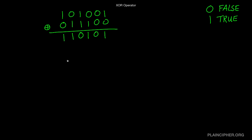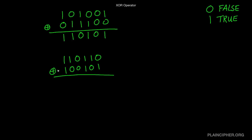Let's try another example: 1, 1, 0, 1, 1, 0 XORed with 1, 0, 0, 1. 1 XORed with 1 gives 0. 1 XORed with 0 is 1. 0 XORed with 0 is 0. 1 XORed with 1 is 0. 1 XORed with 0 is 1. And 0 XORed with 1 is 1.